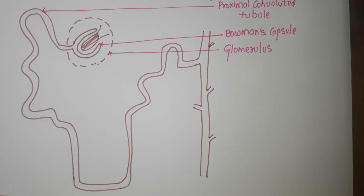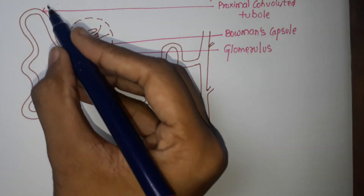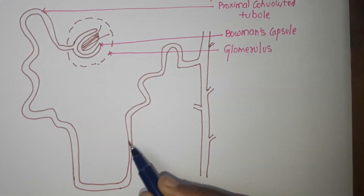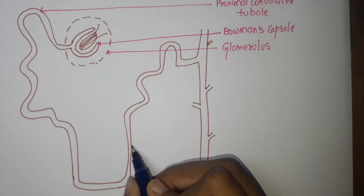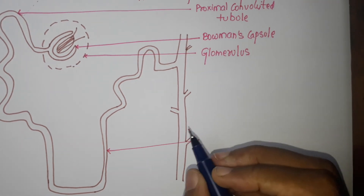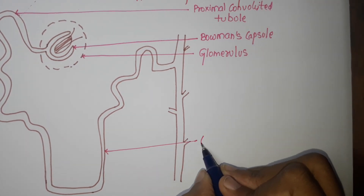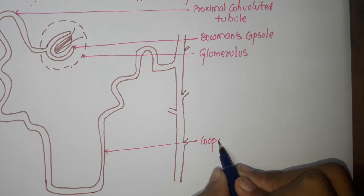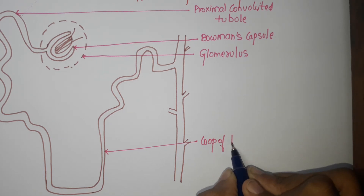Then we move and come here — this is the loop of Henle.